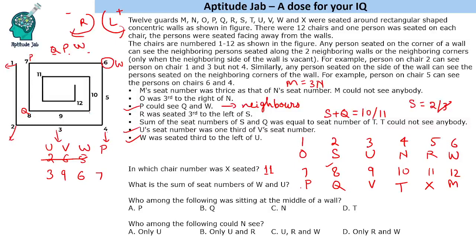What is the sum of seat numbers of W and U? W is 6, U is 3, so total is 9.